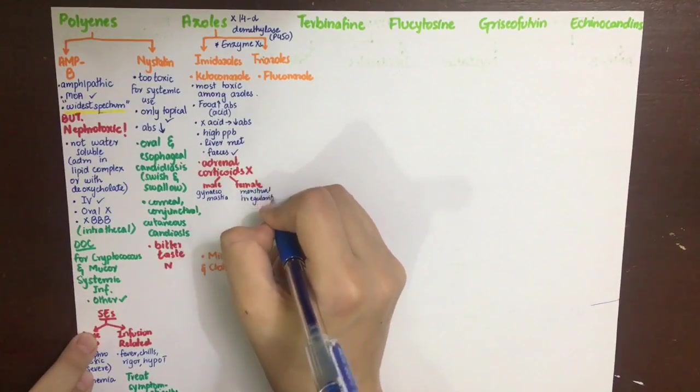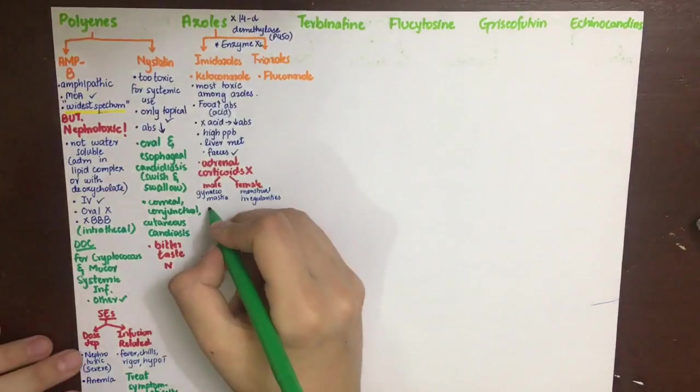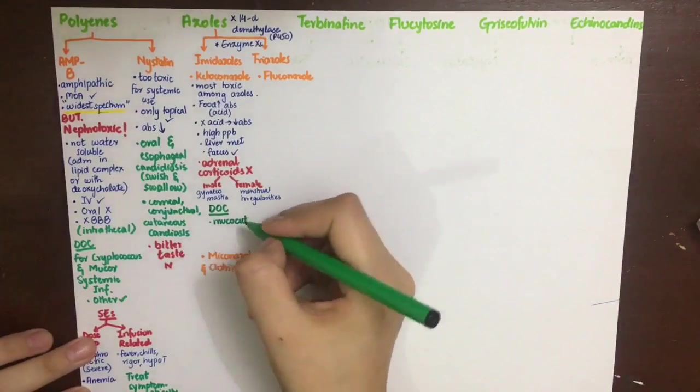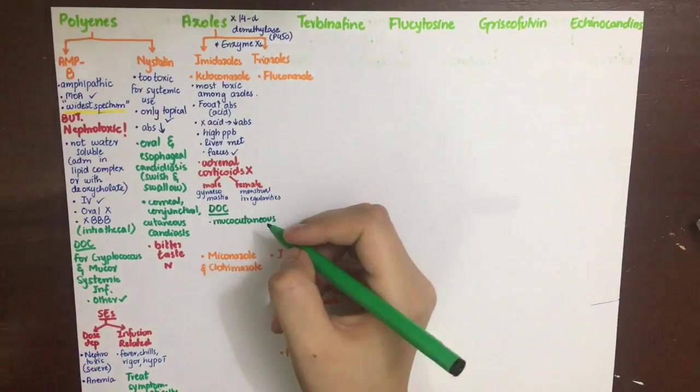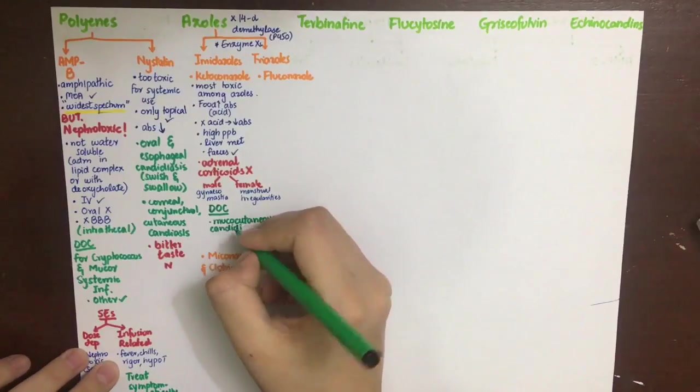Ketoconazole is the drug of choice in cutaneous fungal infections such as mucocutaneous candidiasis or dermatophytosis and dermal leishmaniasis. Remember all of these are topical uses. Ketoconazole is rarely used in systemic fungal infections because of its inhibition of hepatic enzymes and adrenal enzymes.